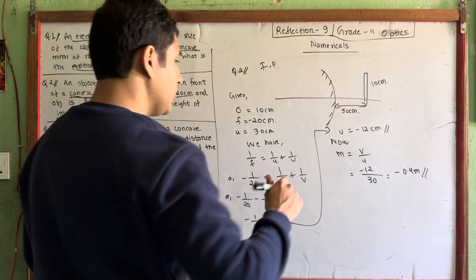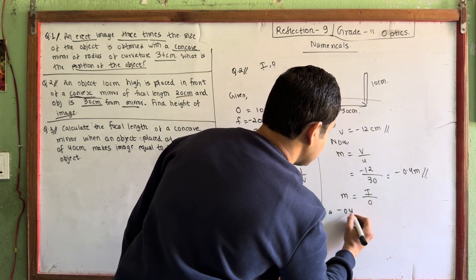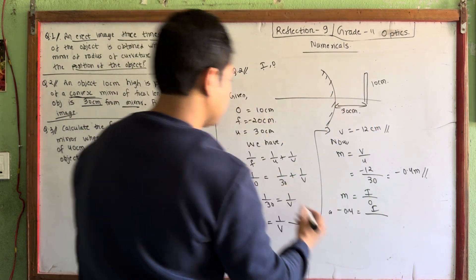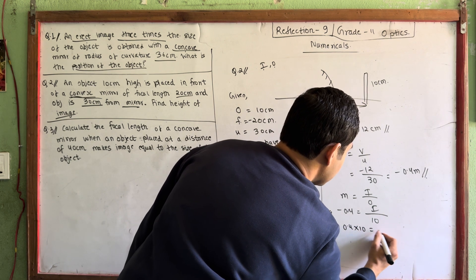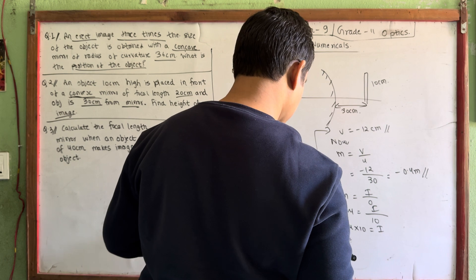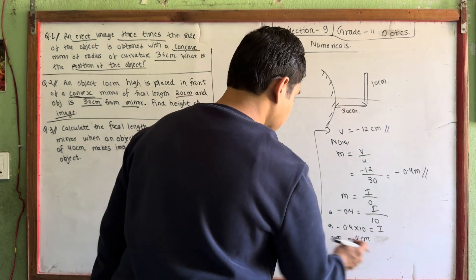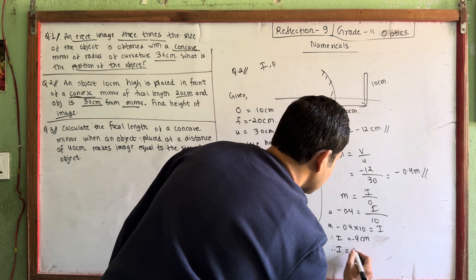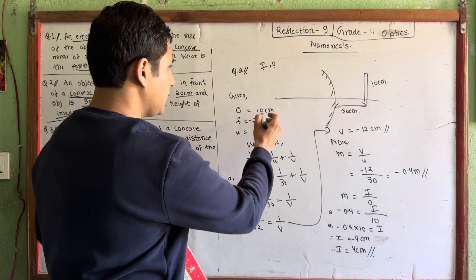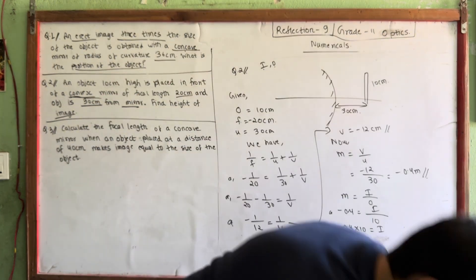The magnification formula is: m = height of image / height of object. So minus 0.4 = image height / 10. Therefore, image height = minus 0.4 × 10 = minus 4 cm. So the answer is 4 cm. This is solved. Let's move on to the next question.